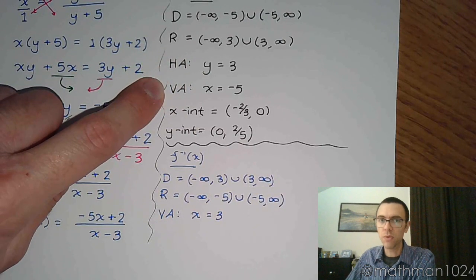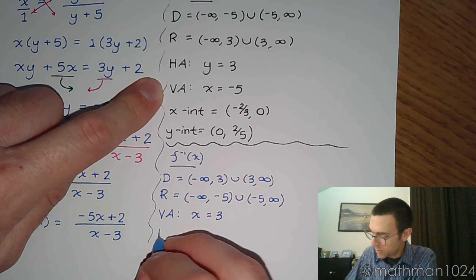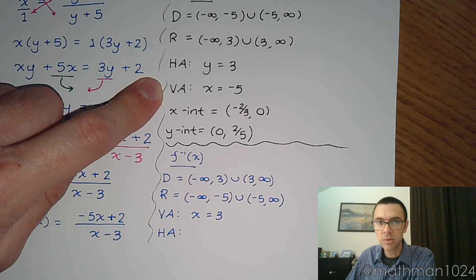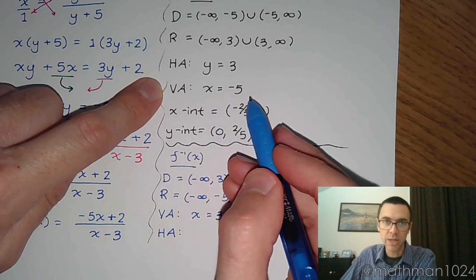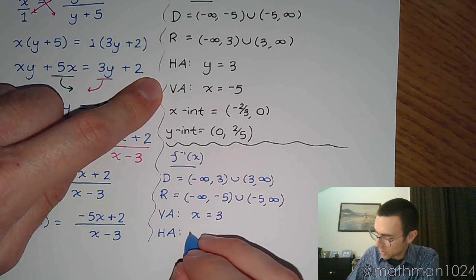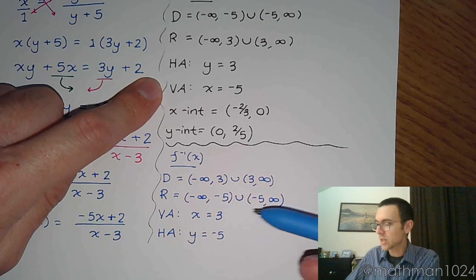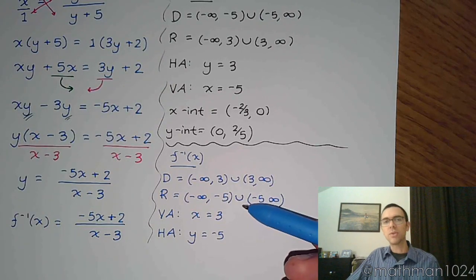Yet a vertical asymptote for your original function, which means you'll have a horizontal asymptote for your inverse. But instead of it being x = -5, because that's a vertical line, it's going to correspond to the horizontal line, y = -5. And again, that connects with this little blip that we have right there for the range.